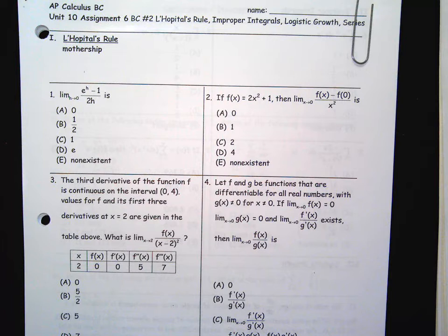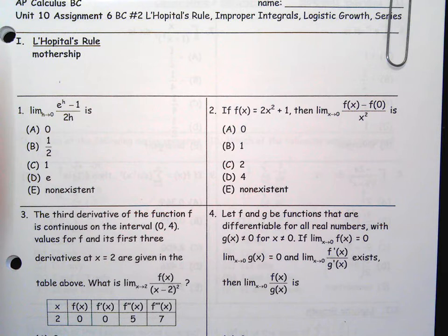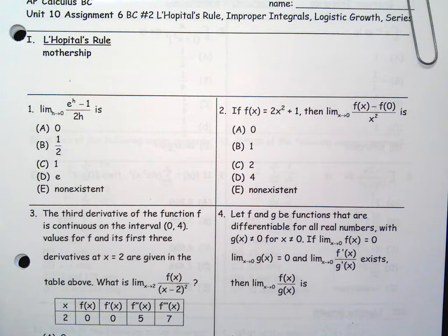Okay, here we go. BC 10.6, BC number 2, Multi-Choice Packet. This one is going to focus on L'Hôpital's Rule and improper intervals, logistic growth, and some more serious stuff.